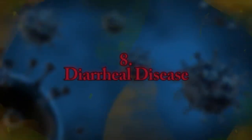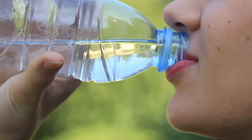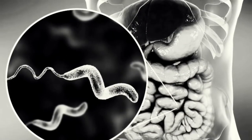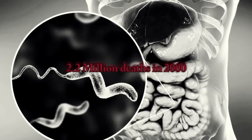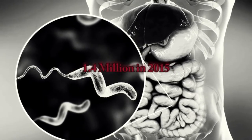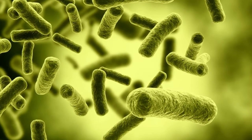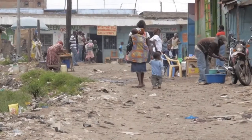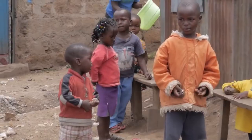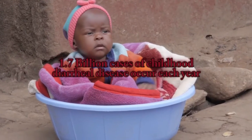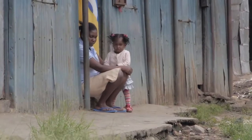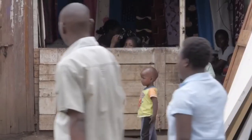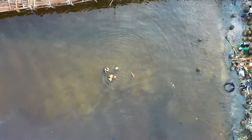Number 8: Diarrheal Disease. Dehydration caused by diarrheal disease resulted in 1.4 million deaths in 2015, down from 2.2 million in 2000. Unfortunately, diarrheal disease is the second leading cause of death in children under age 5 and a primary cause of malnutrition in this age group. Almost 1.7 billion cases of childhood diarrheal disease occur each year. Risk factors include poor sanitary conditions, malnourishment, a weakened immune system, young age, and no access to clean water.